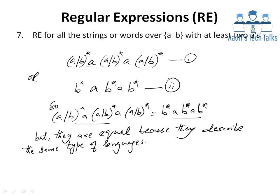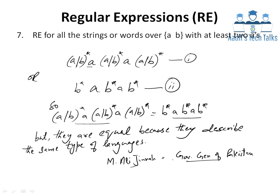These two expressions are not algebraically equal, but they describe the same type of language. For example, 'Muhammad Ali Jinnah' equals 'Governor General of Pakistan' — there might be another Governor General, but Muhammad Ali Jinnah is also a Governor General. Both terms describe the same personality. Similarly, both regular expressions describe the same language but are not algebraically equal.